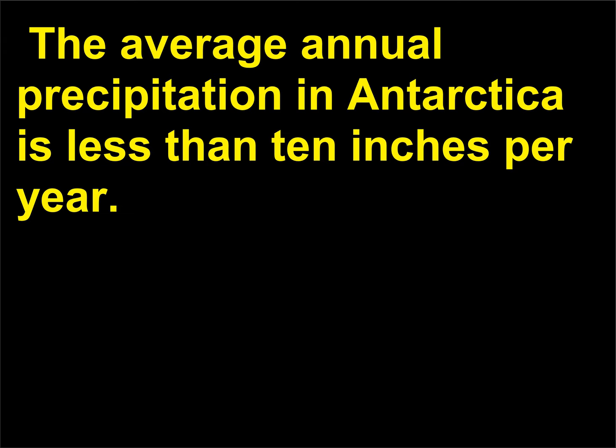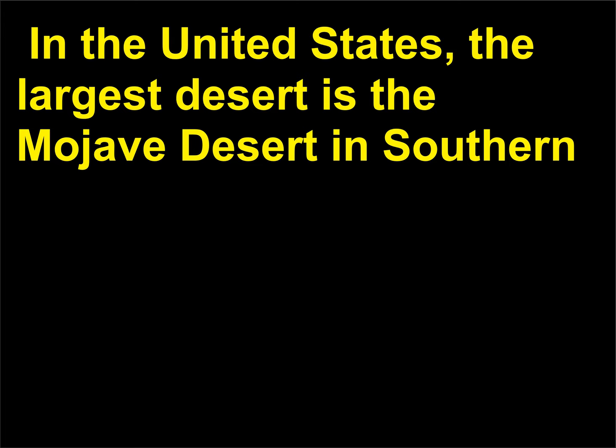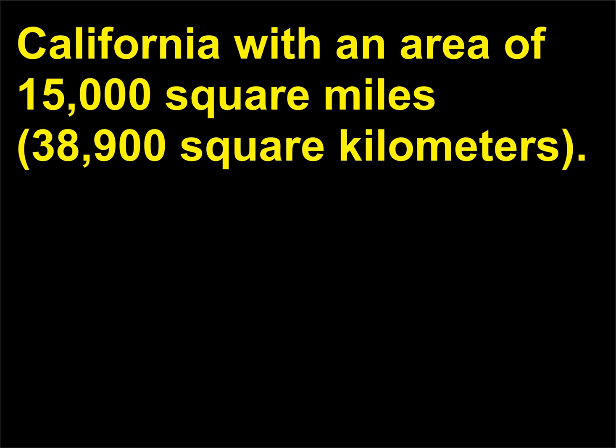The average annual precipitation in Antarctica is less than 10 inches per year. The Sahara Desert, the world's largest, is three times the size of the Mediterranean Sea. In the United States, the largest desert is the Mojave Desert in Southern California, with an area of 15,000 square miles, 38,900 square kilometers.